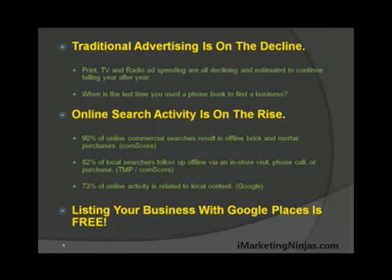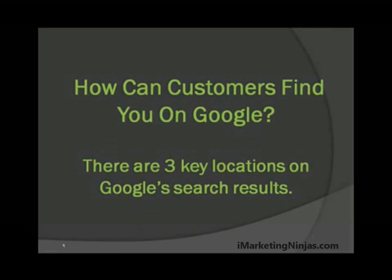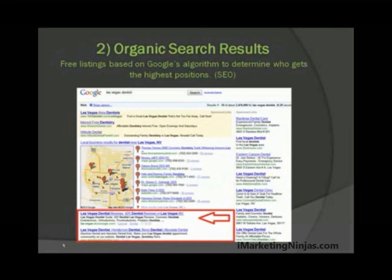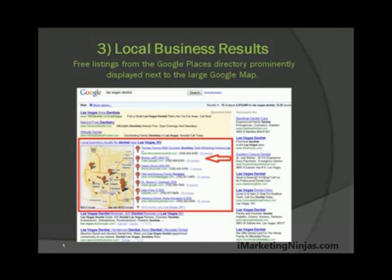Listing your business with Google Places is free. How can customers find you on Google? Basically there are three locations on Google search results. Number one is the paid listings, otherwise known as AdWords — these sponsored listings are located at the top and on the right side. Number two is organic search results — free listings based on Google's algorithm, essentially SEO or search engine optimization. And three, local business results — free listings from Google Places directory, prominently displayed next to the large Google map.